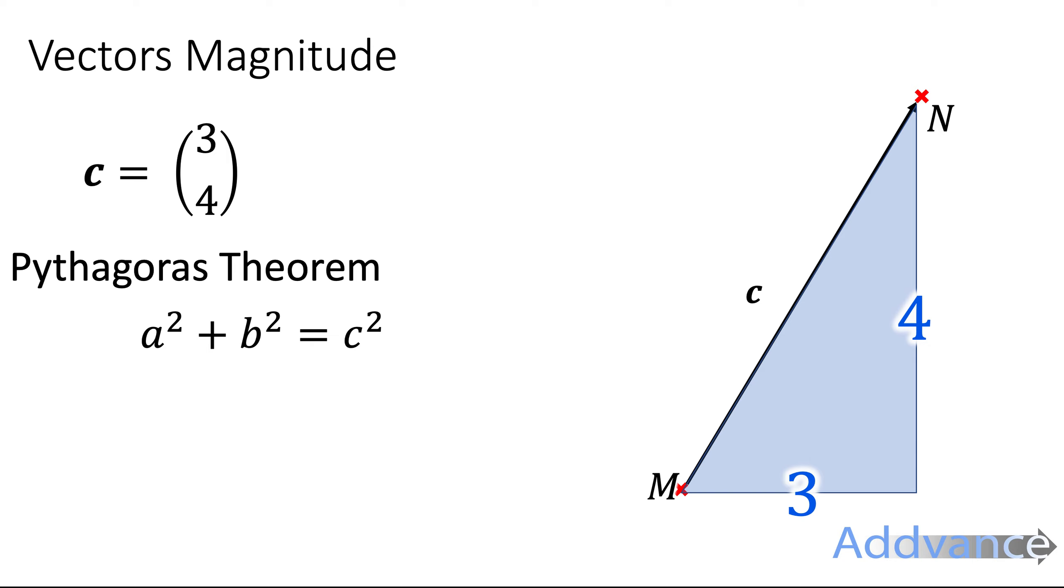We substitute in three and we substitute in four and three squared is nine plus four squared is sixteen and we square root it. Square root of that will give us our answer and the square root of twenty five which is five. And so the answer is c the size of c is five.